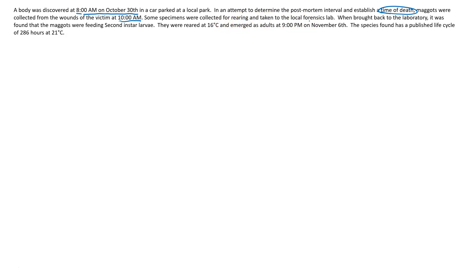Some specimens were collected for rearing — that means taken to a local forensic lab and then grown to adulthood. When brought back to the laboratory, it was found that the maggots were feeding second instar larvae, which tells us the current stage. They were grown at 16 degrees Celsius and emerged as adults at 9 o'clock PM on November 6th. The species found has a published life cycle of 286 total hours grown at 21 degrees Celsius. This is the information forensic investigators gained at the crime scene and all you need to determine a time of death utilizing forensic entomology.